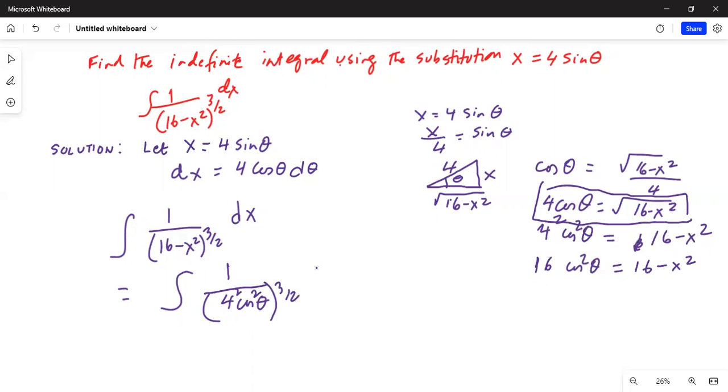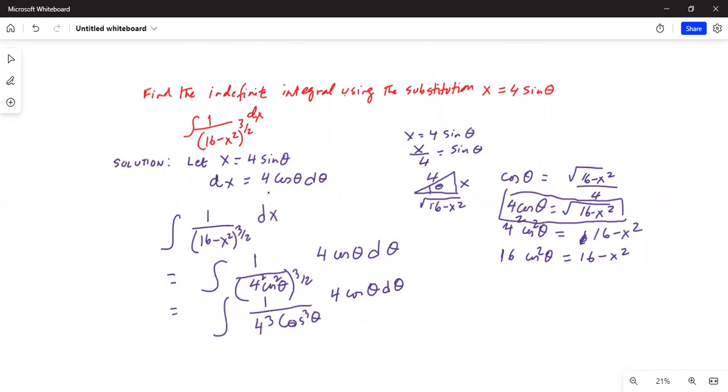And then for dx, I can write 4 cosine theta d theta. So this now reduces to integration in the denominator, 4 cubed cosine cubed theta, and in the numerator, 4 cosine theta d theta. This equals integration of 1 over 4 squared cosine squared theta d theta.